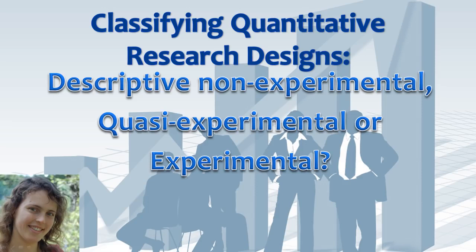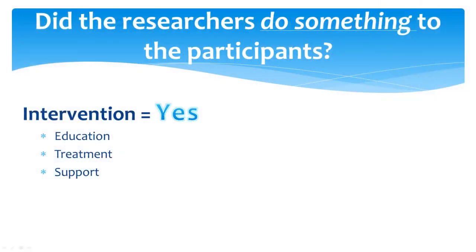First, ask yourself if the researchers did anything to the participants. More specifically, was there an intervention? Interventions include things like support groups, educational sessions, treatments for a condition, or some other variable that is being tested. If people would not normally have something without being in the study, but the researcher gives it to them to see what it will do, then that is an intervention.